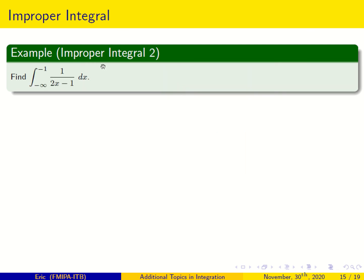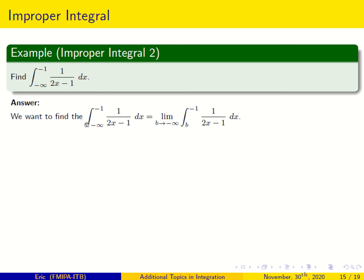The next example: find the improper integral of 1 over (2x minus 1) dx from minus infinity to minus 1. This is an improper integral because the boundary goes to minus infinity. We write this as the limit as b goes to minus infinity of the integral from b to minus 1 of 1 over (2x minus 1) dx.